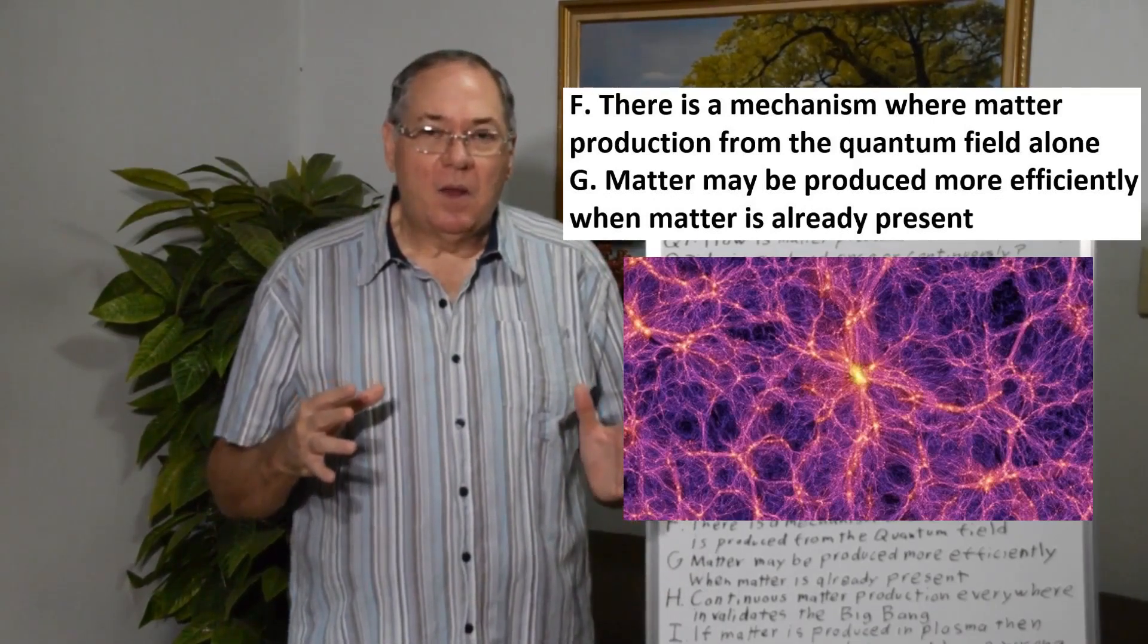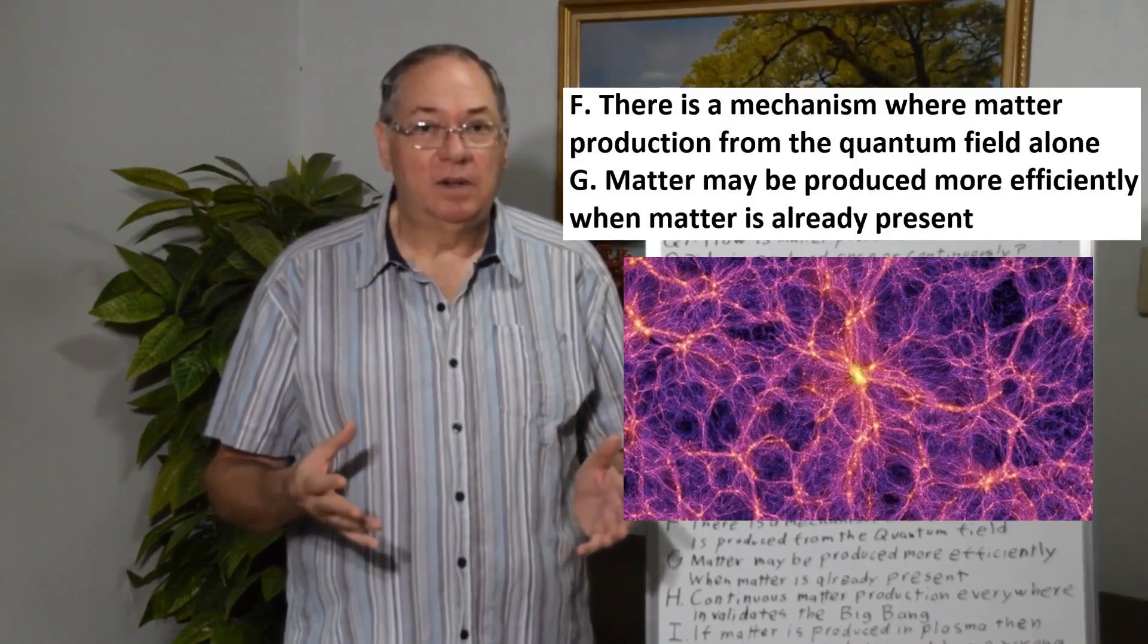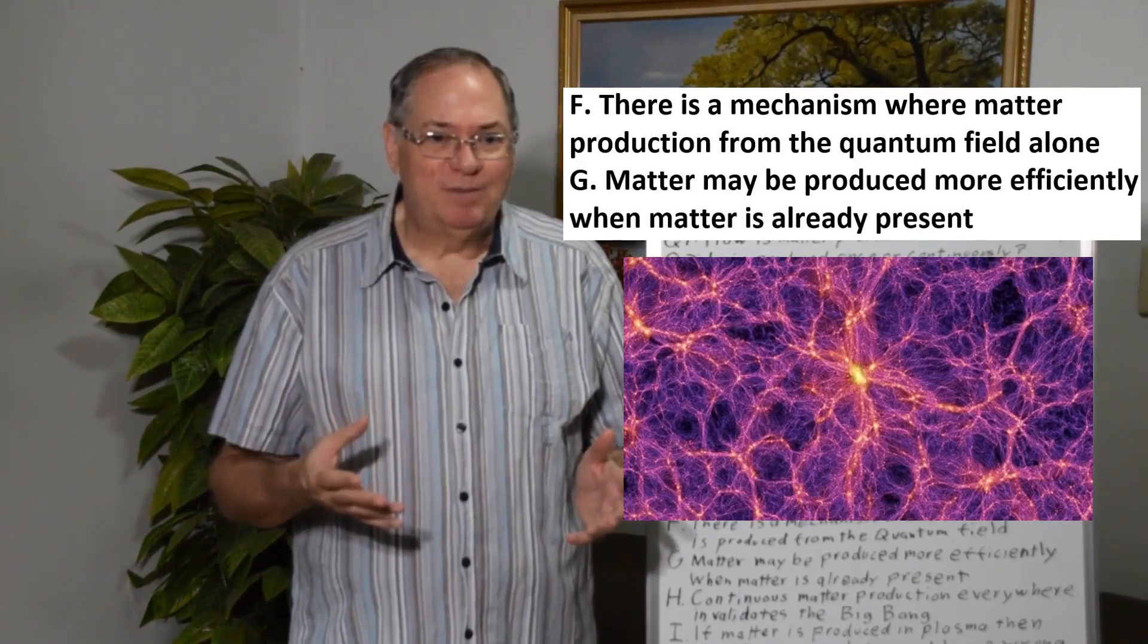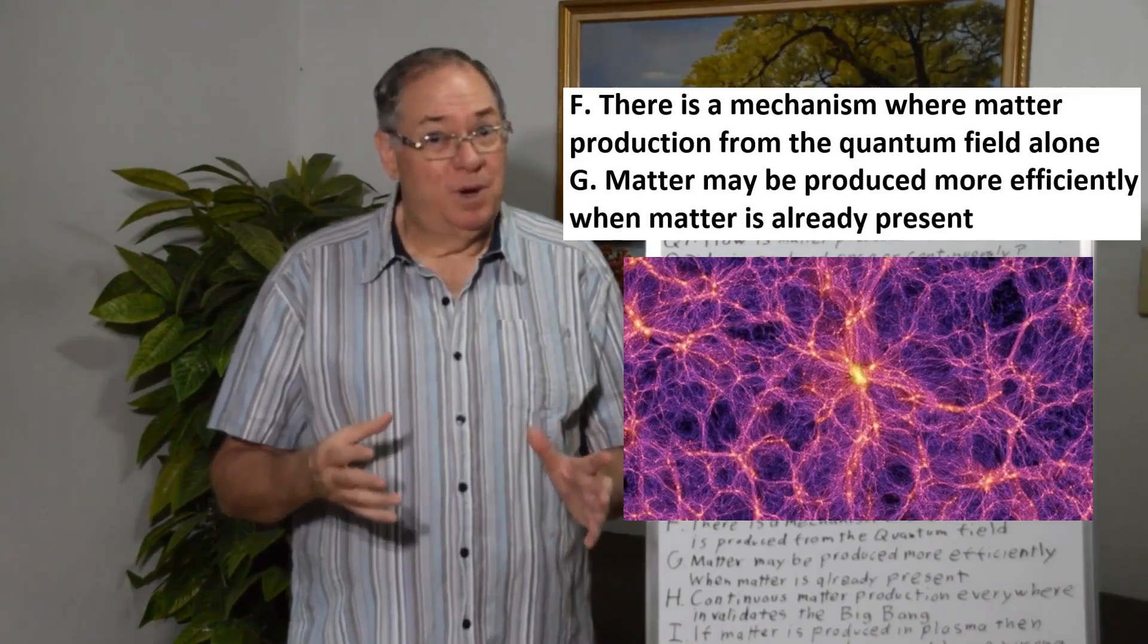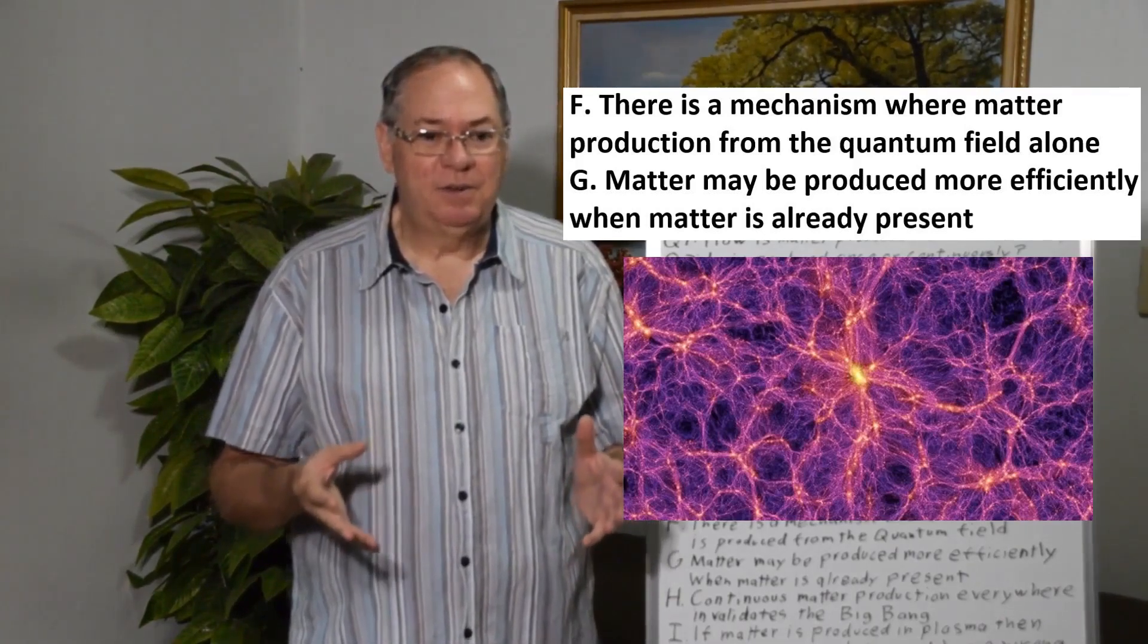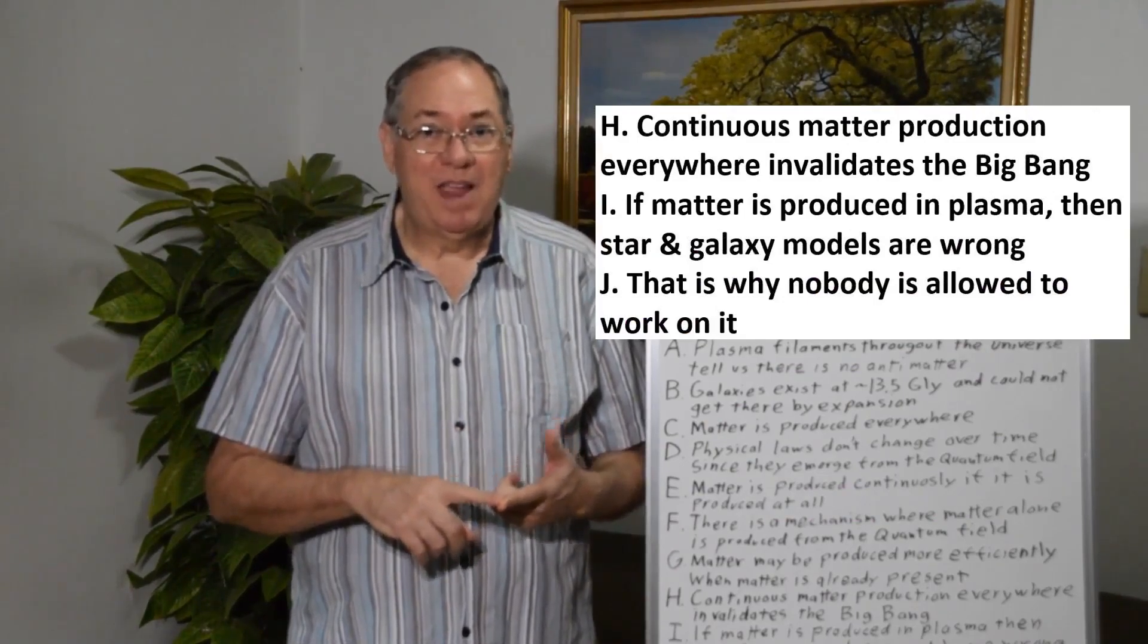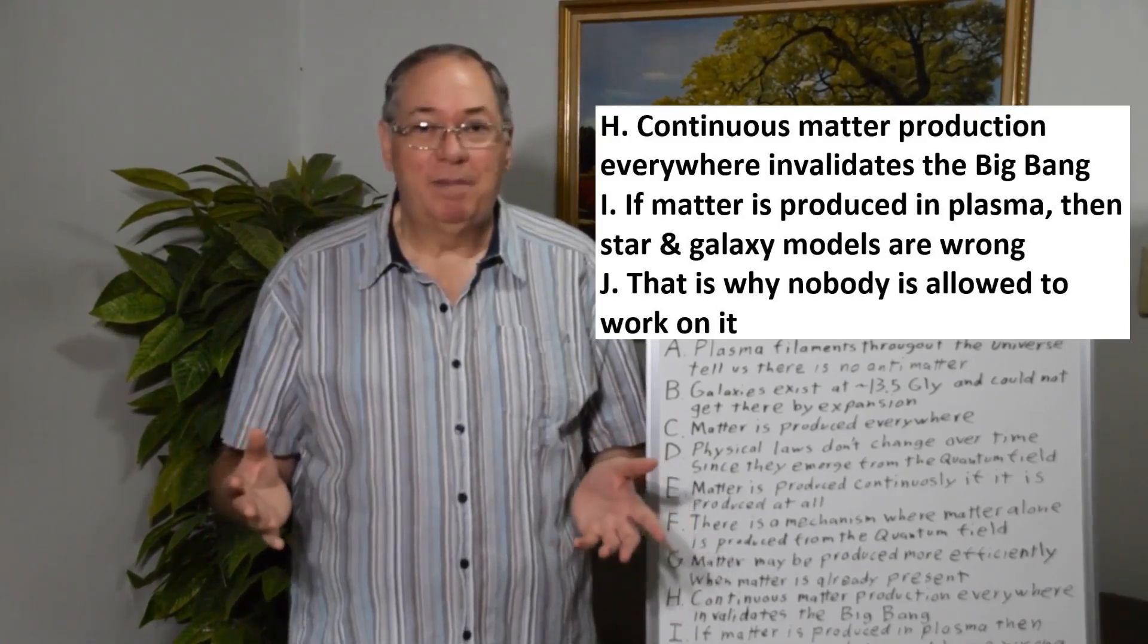So we should see enhanced matter production somewhere in the universe, like perhaps along the filament strings of plasma, as we sort of observe. Matter is produced more efficiently in these plasma filaments where stars and galaxies are known to be. So that means we have continuous matter production everywhere, which invalidates the Big Bang Model.